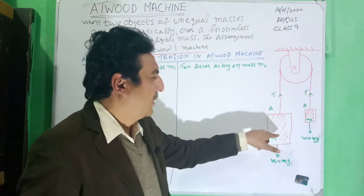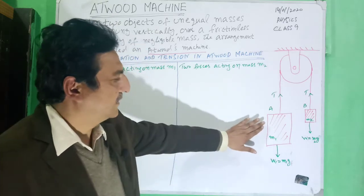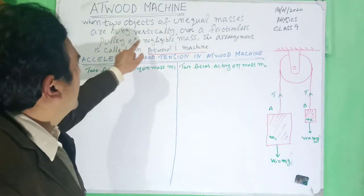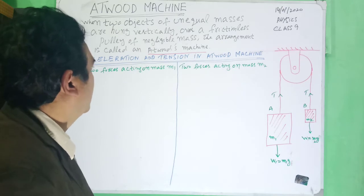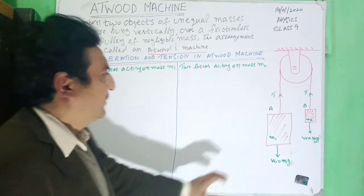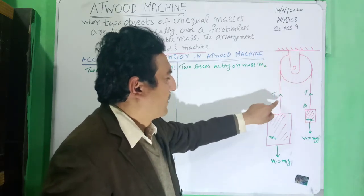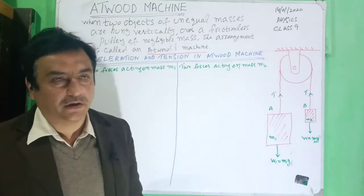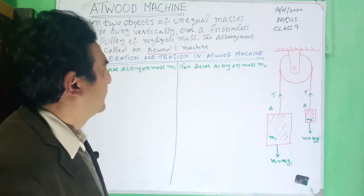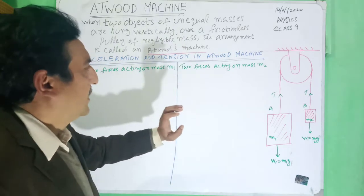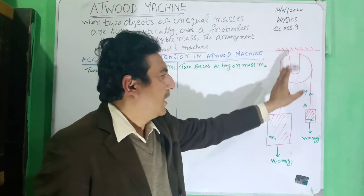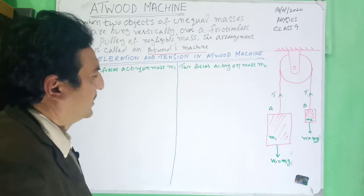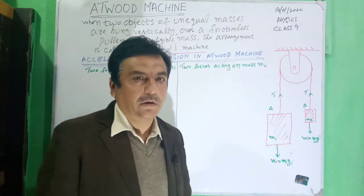These are two objects and it is clear that two masses are unequal. This mass is large and this one is small. They are hung vertically over a frictionless pulley of negligible mass. These two masses are hung or suspended with the help of a string, and this pulley is considered frictionless with negligible mass. This arrangement is called Atwood's Machine.